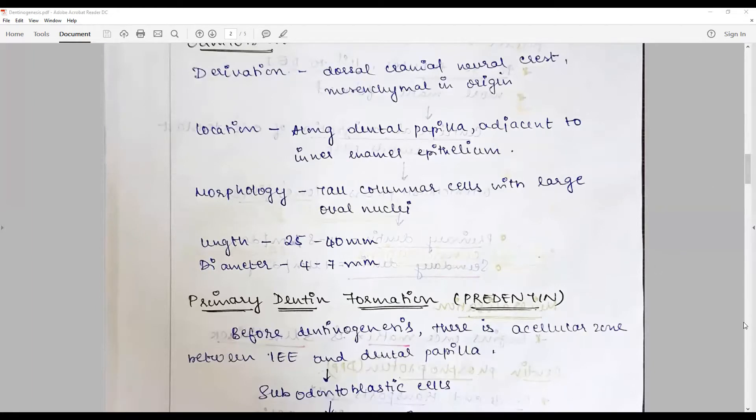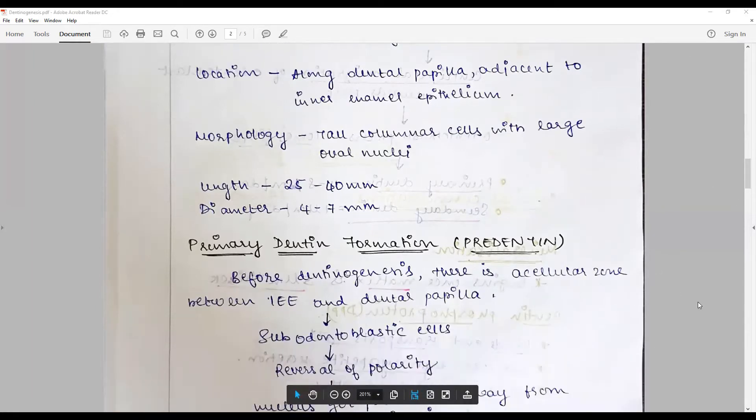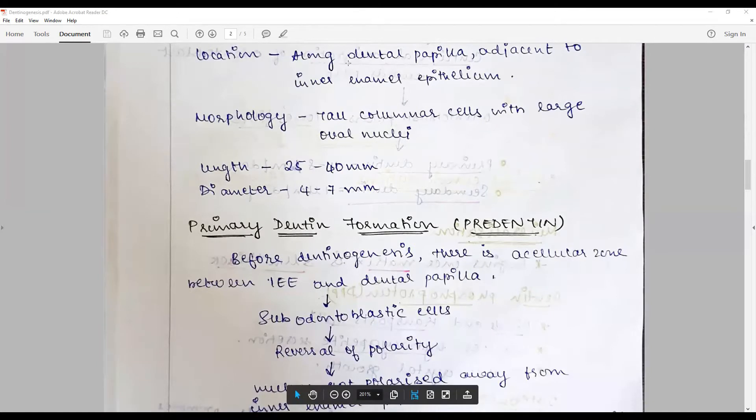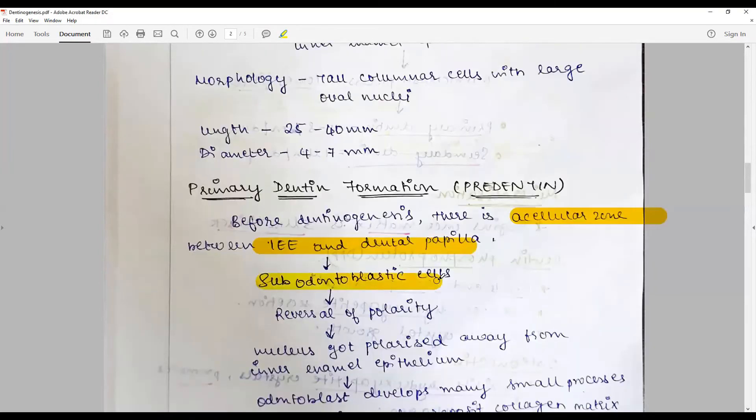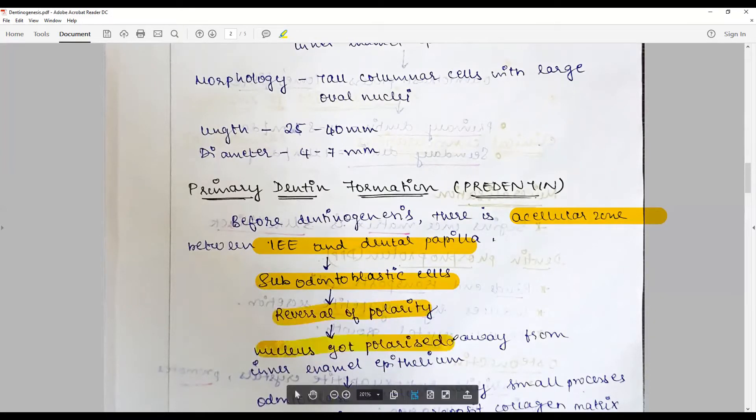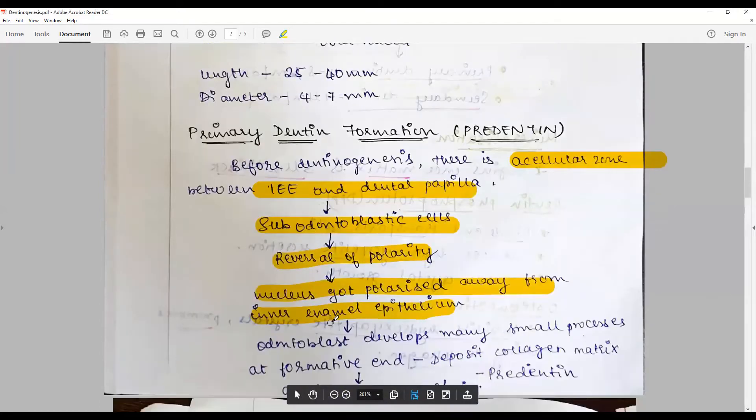Before dentinogenesis, there is an acellular zone between the inner enamel epithelium and the dental papilla. It is filled by sub-odontoblastic cells which undergo a reversal of polarity. The nucleus gets polarized away from the inner enamel epithelium, paving way for the formation of odontoblasts.